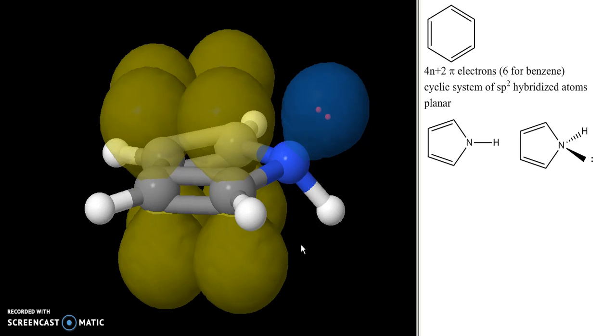However, that's not the correct view of pyrrole, because what pyrrole can do is it can take these electrons and put them into a p orbital if it changes its hybridization from sp2 to sp3—excuse me, from sp3 to sp2—so that it looks something like this.